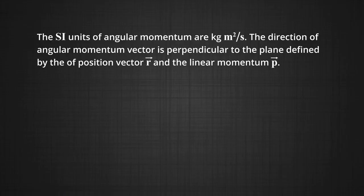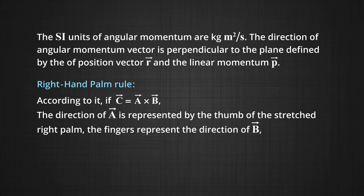The value of r depends upon the choice of origin since it involves the particle's position vector relative to O or the origin. The SI units of angular momentum are kg·m²/s. The direction of the angular momentum vector is perpendicular to the plane comprising of the position vector and linear momentum, and we can use a right-hand palm rule for vector products to determine the direction of angular momentum.